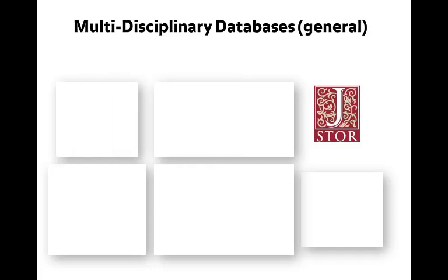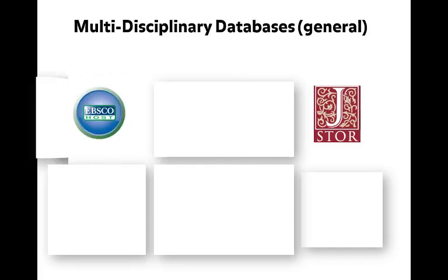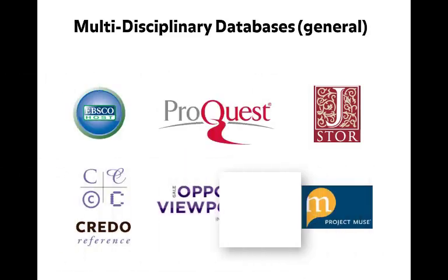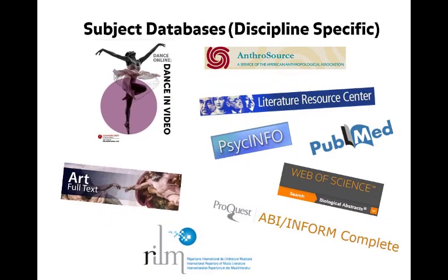Maybe you've heard of JSTOR, EBSCO's Academic Search Complete, ProQuest Research Library, or Opposing Viewpoints. These are examples of general multidisciplinary library databases. The library also subscribes to subject databases tailored to a specific academic discipline. These are great for in-depth research in a particular field.